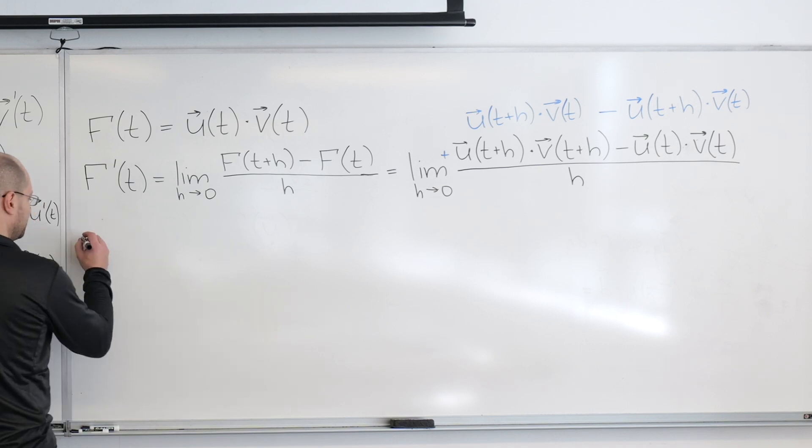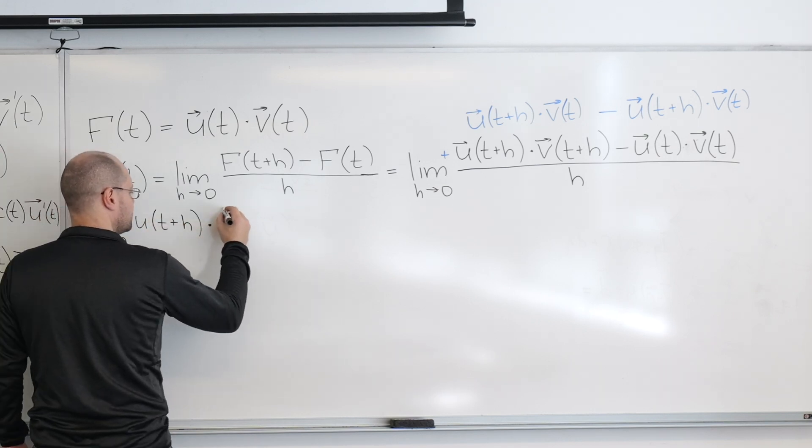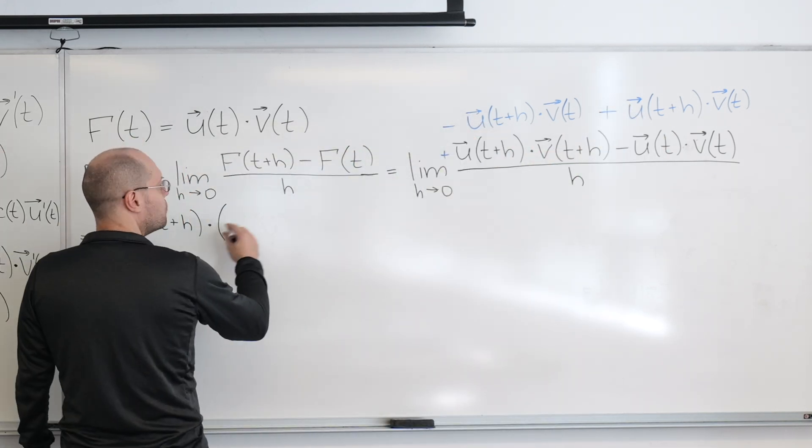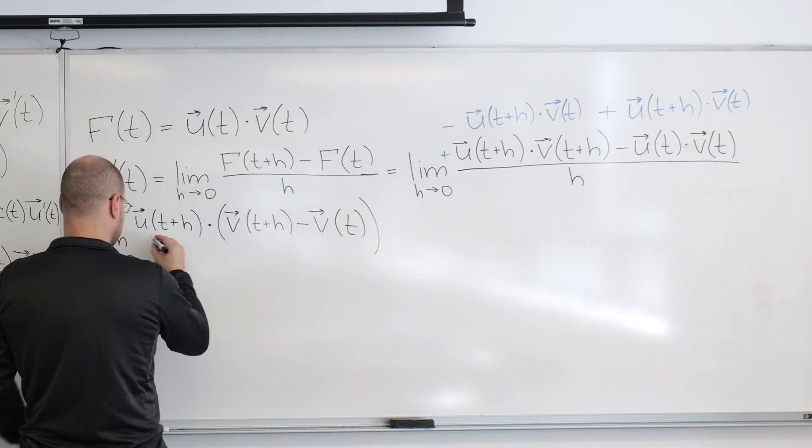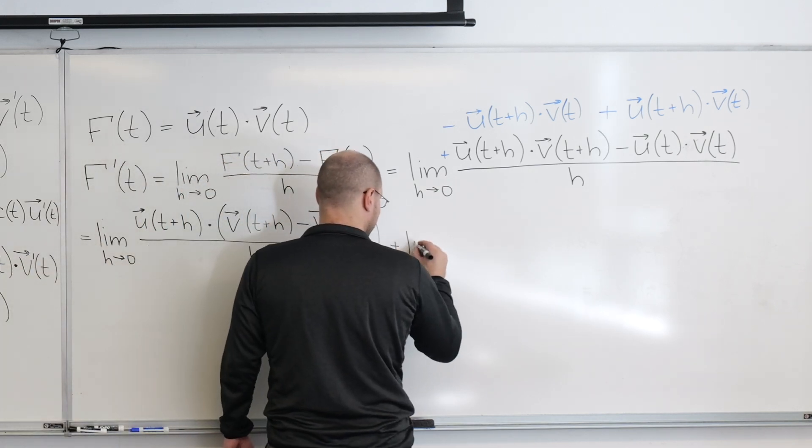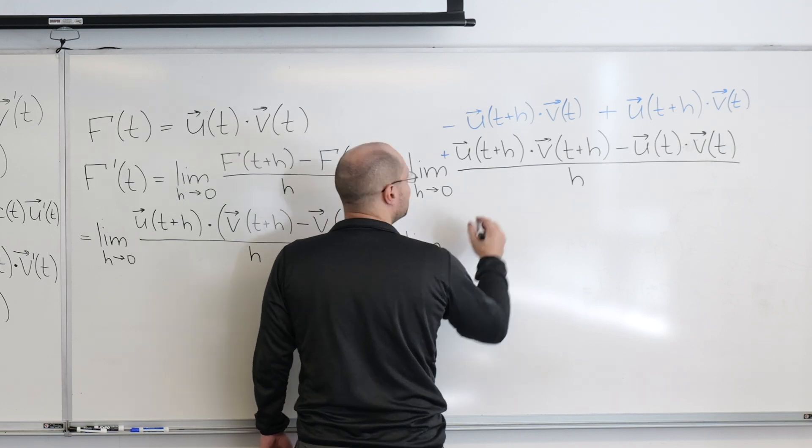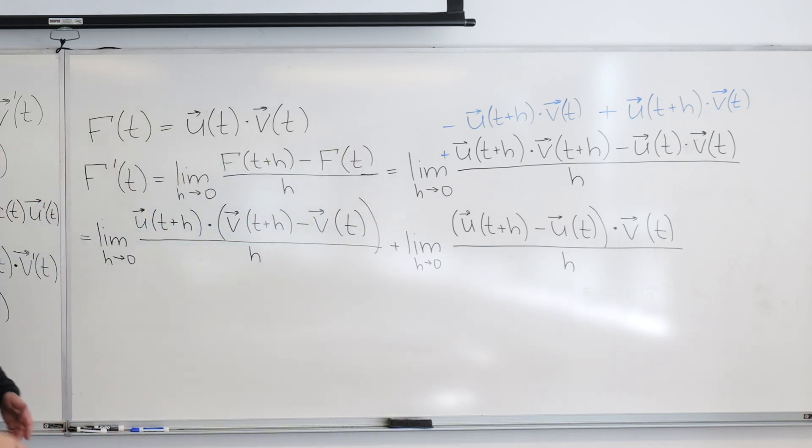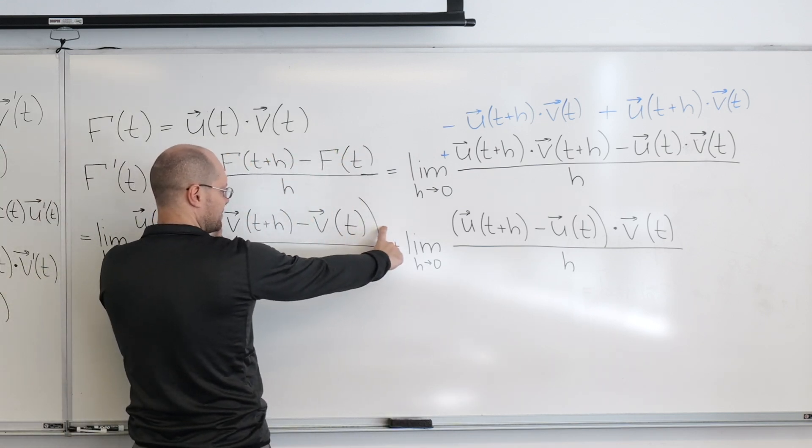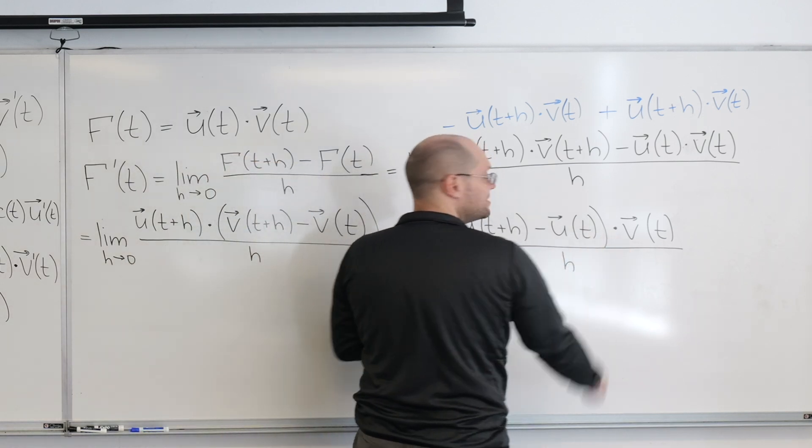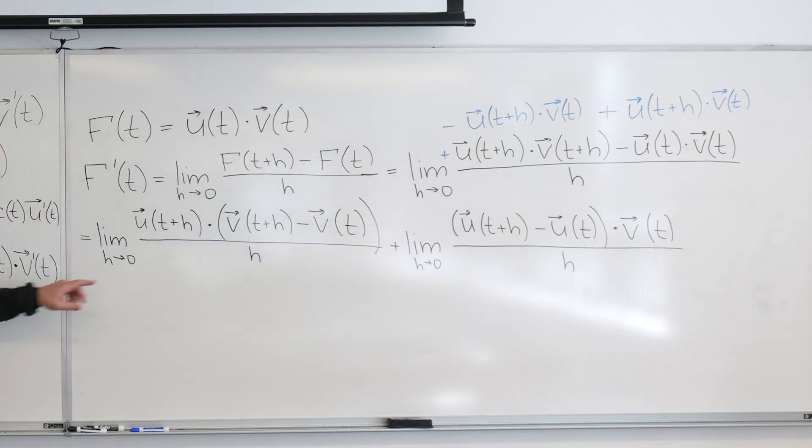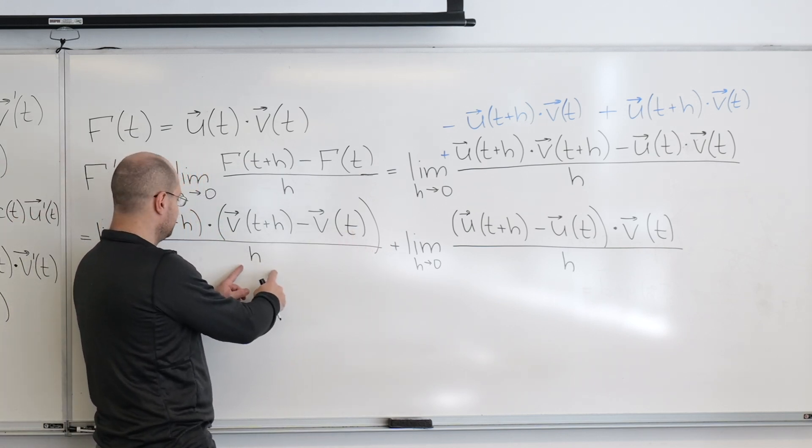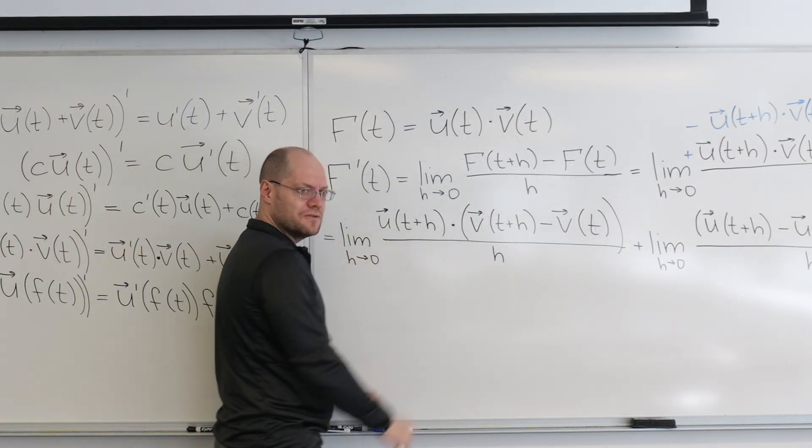So, here's what I have. Okay. And actually, what I really want to divide by h is just this difference. And here, it's just this difference. So, now as we take this limit, let's observe that this difference divided by h is v prime. This, as h goes to zero, is just u of t. Right?